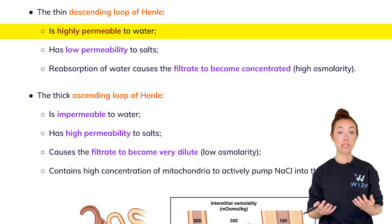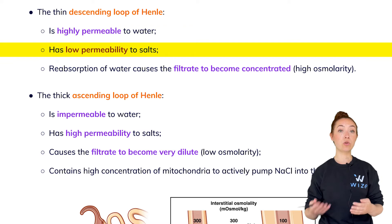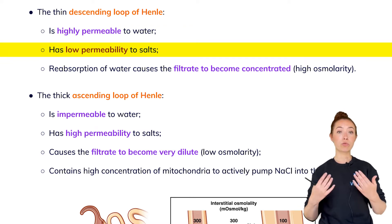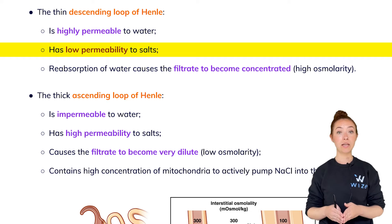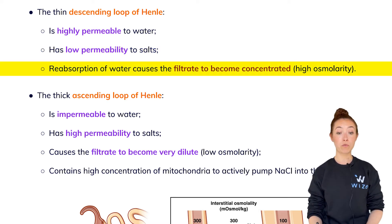A key aspect of the descending loop is that it has low permeability to salt. It absorbs water but doesn't reabsorb salt, which means the salts are left behind. The osmolarity of the filtrate as it goes down the descending loop becomes very high. The reabsorption of water alone causes the filtrate to become very concentrated—high osmolarity.